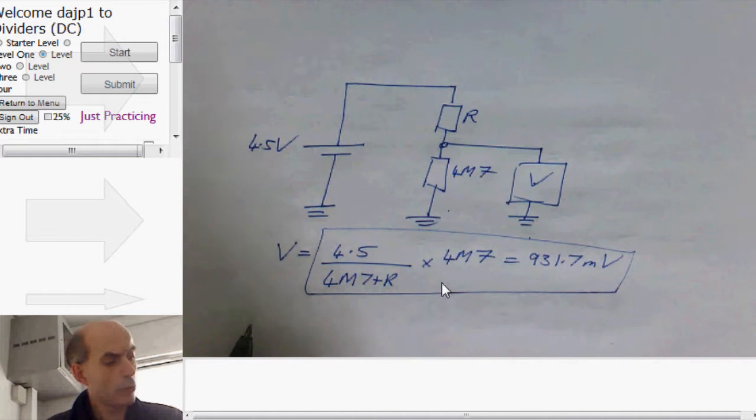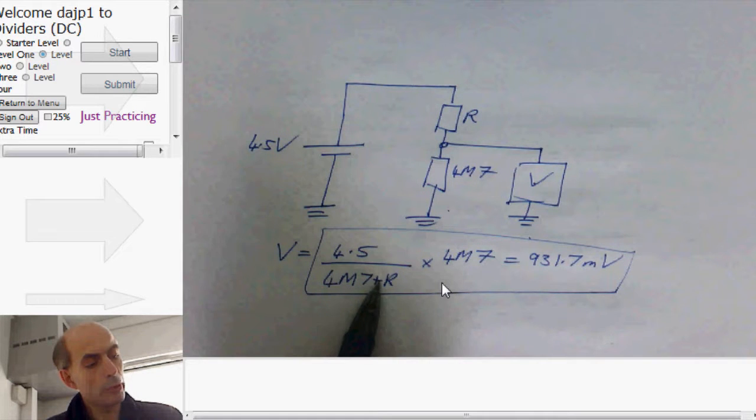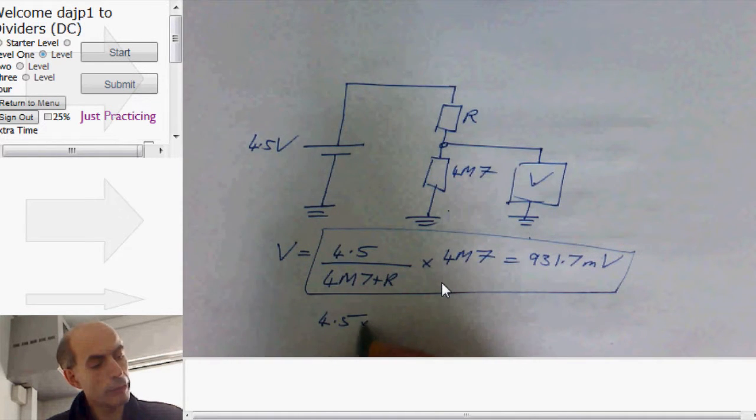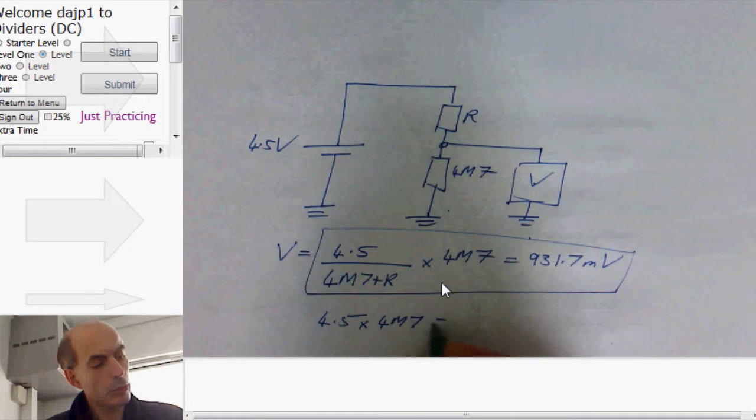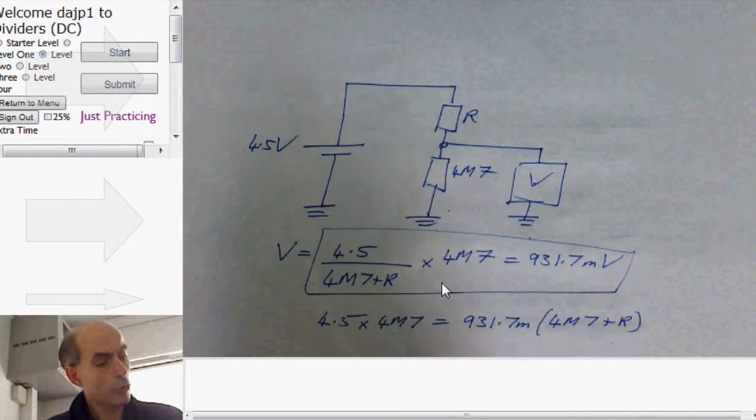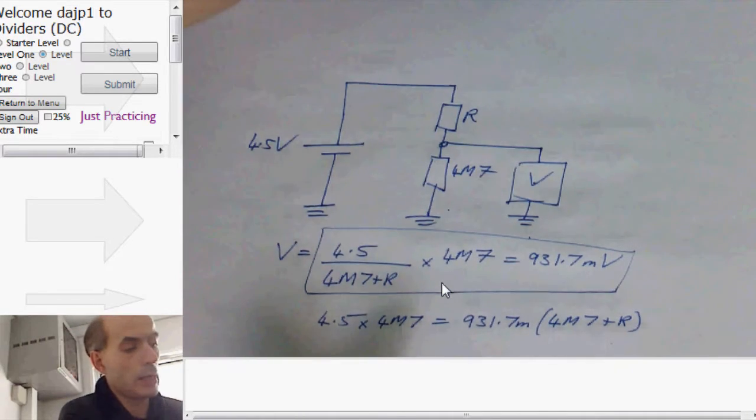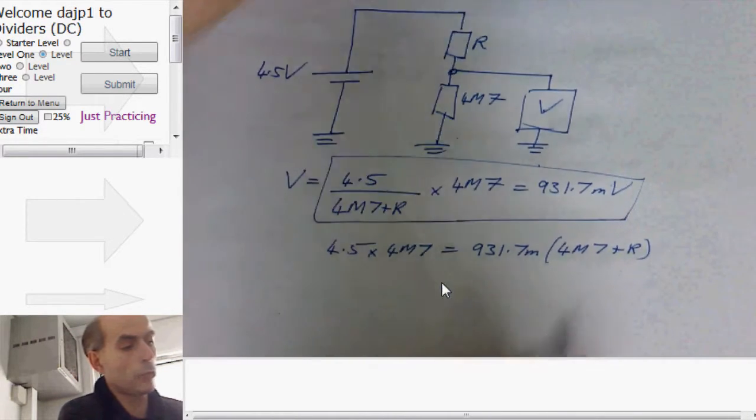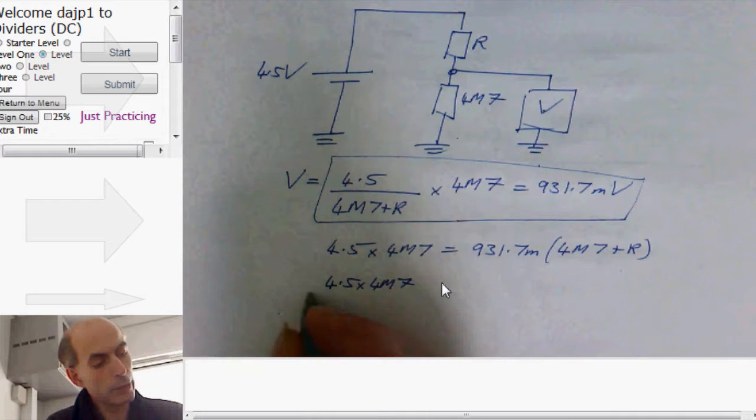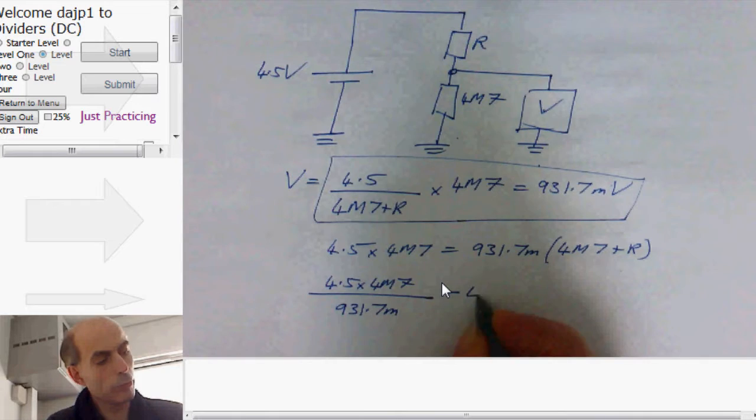Easiest way to do that, move 4 meg 7 plus R up to here by multiplying both sides by 4 meg 7 plus R. That would give you 4.5 times 4 meg 7 equals 931.7 millivolts times 4 meg 7 plus R. Divide through by 931.7 and subtract 4 meg 7 and we get 4.5 times 4 meg 7 divided by 931.7 milli minus 4 meg 7.